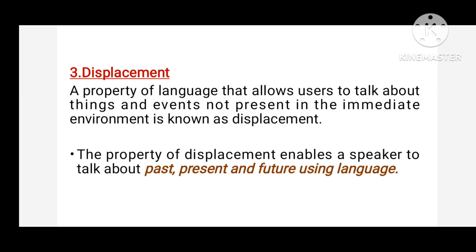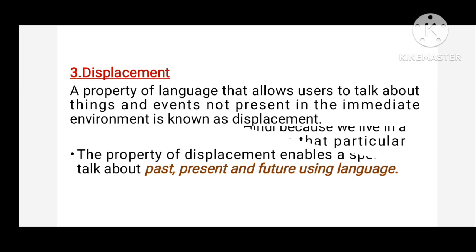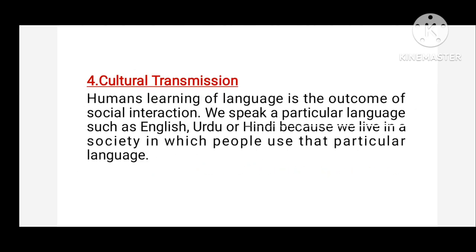Animals lack the property of displacement because animals are not able to talk about abstract things or talk about their future or past. The fourth property is cultural transmission, and this is the key property of human language, because human learning of language is the outcome of social interaction.